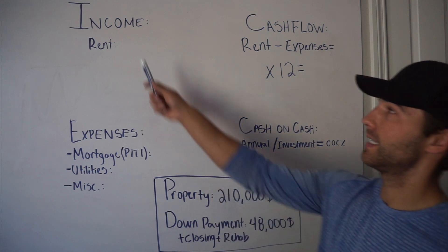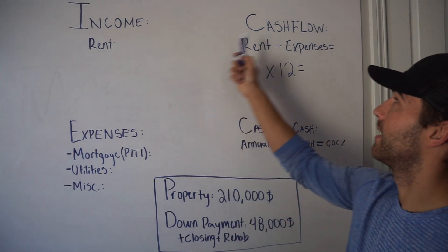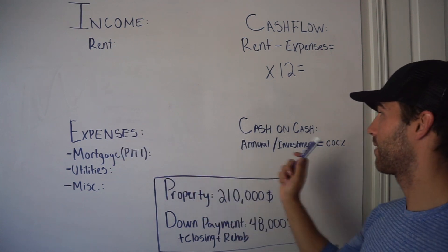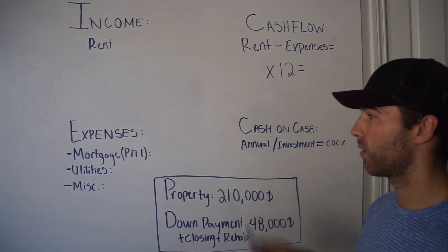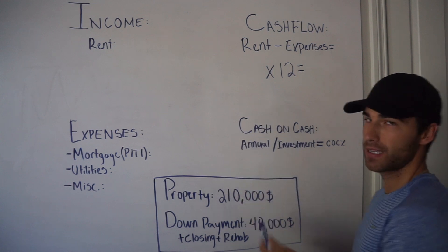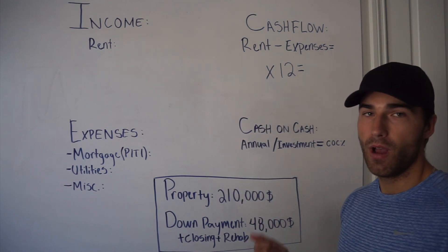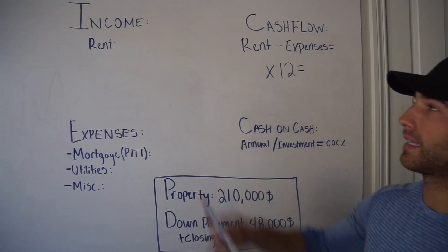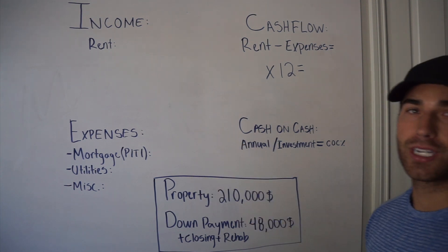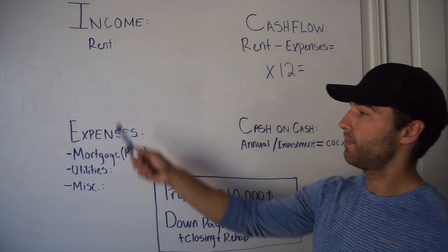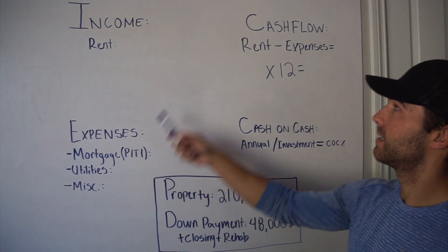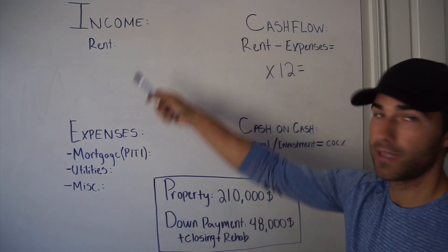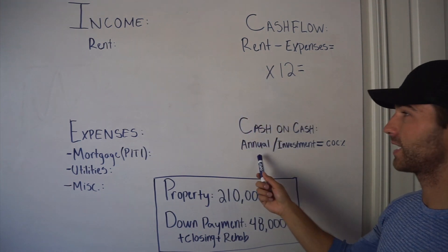There are four different categories as you guys can see: there's an income category, a cash flow category, an expense category, and then a cash on cash return category. Cash on cash return is the premise of this whole video and what we're trying to figure out. You basically go from income to expenses, your cash flow is based on those two boxes, and then based on all three you'll find your cash on cash return.